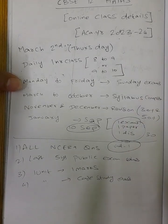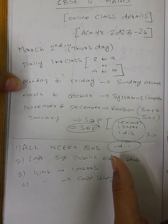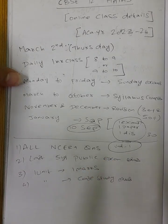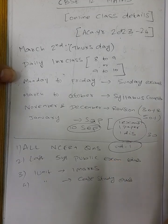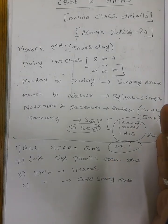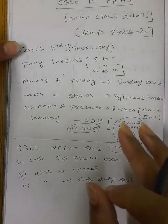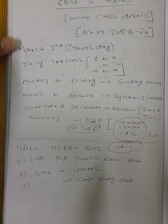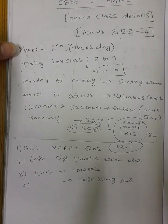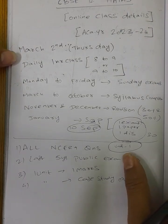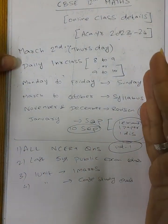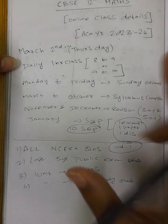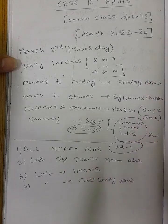If you have a doubt in unit 7 after the class is completed, you can clarify that doubt separately. You need to complete unit 7. If you have a total commitment in CBSE 12th board exam, there are very good chances of success.